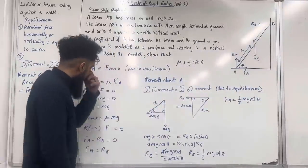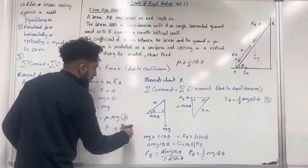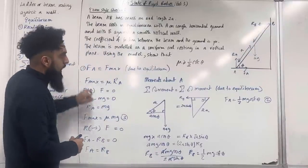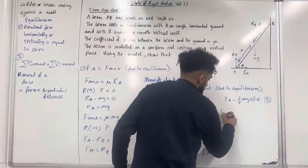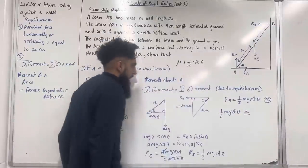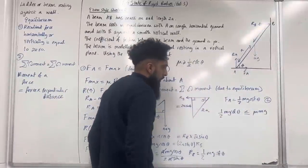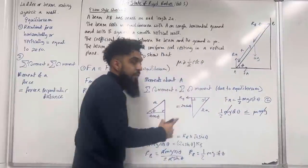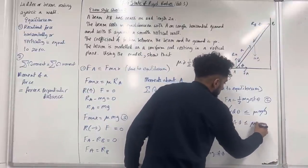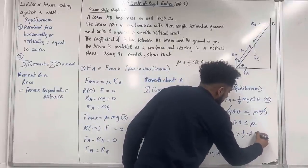Substituting equations 2 and 3 into inequality 1: ½Mg cot θ ≤ μMg. Dividing through by Mg: ½ cot θ ≤ μ, hence μ ≥ ½ cot θ, as required. Absolutely beautiful — that is the end of exam style question 2.